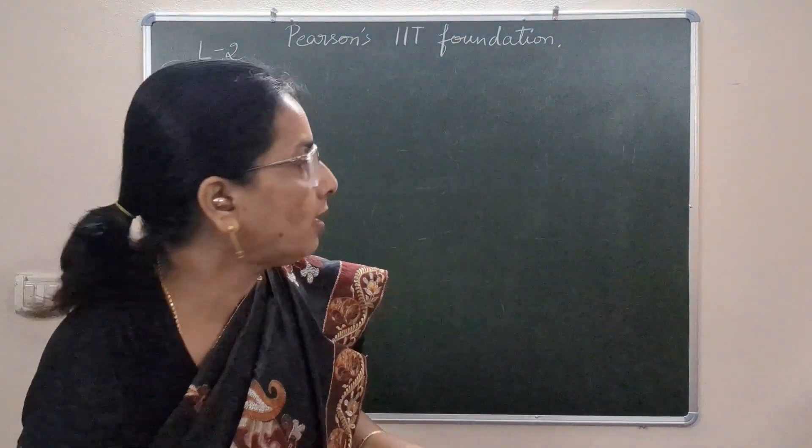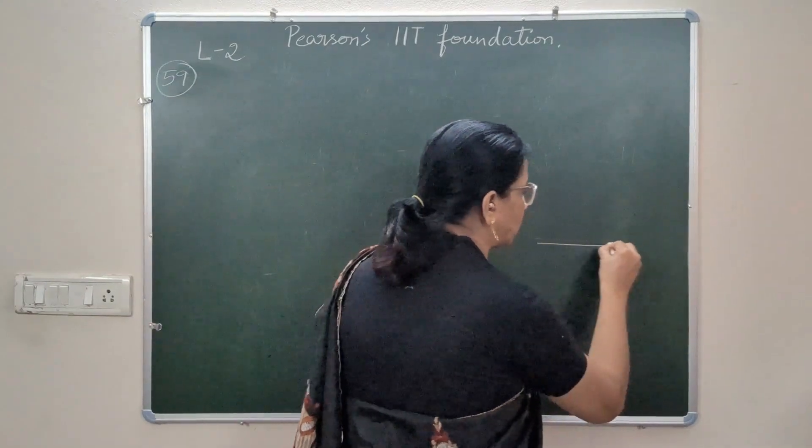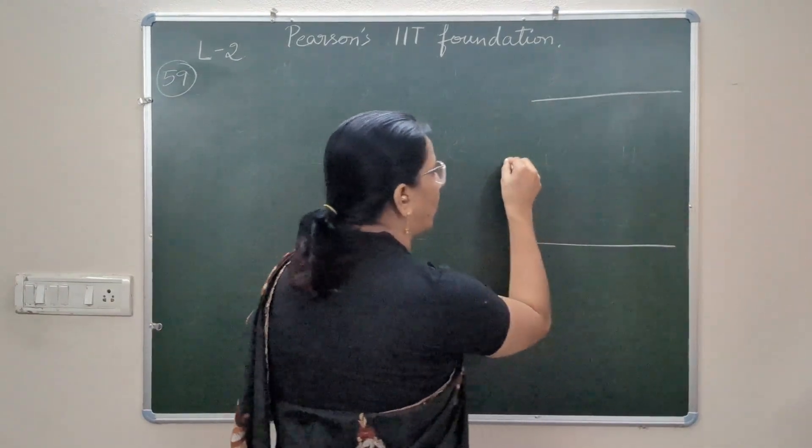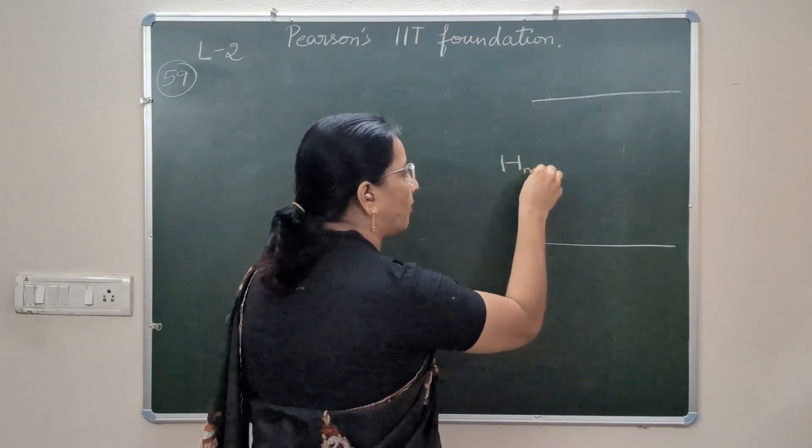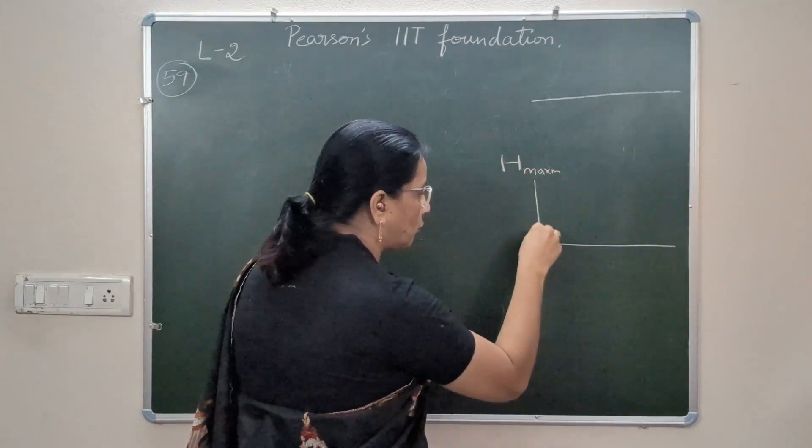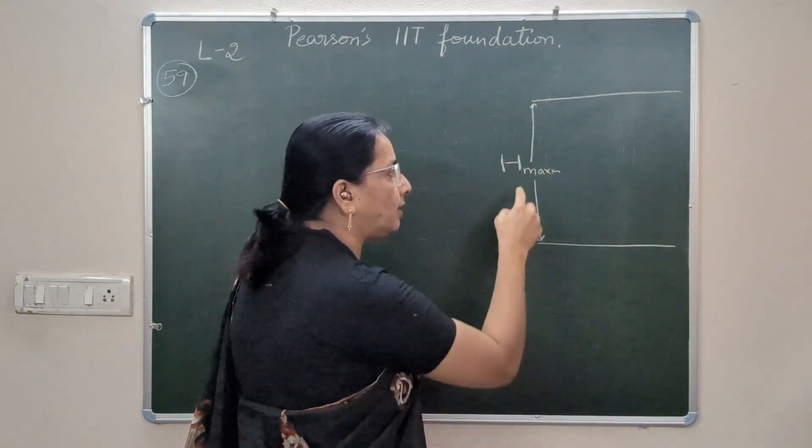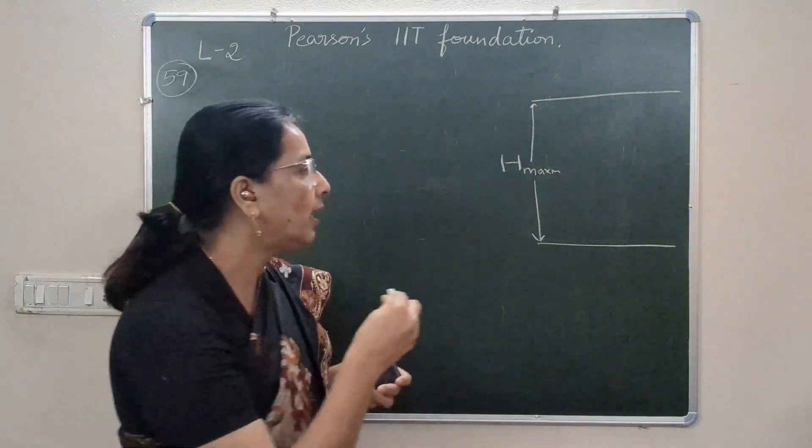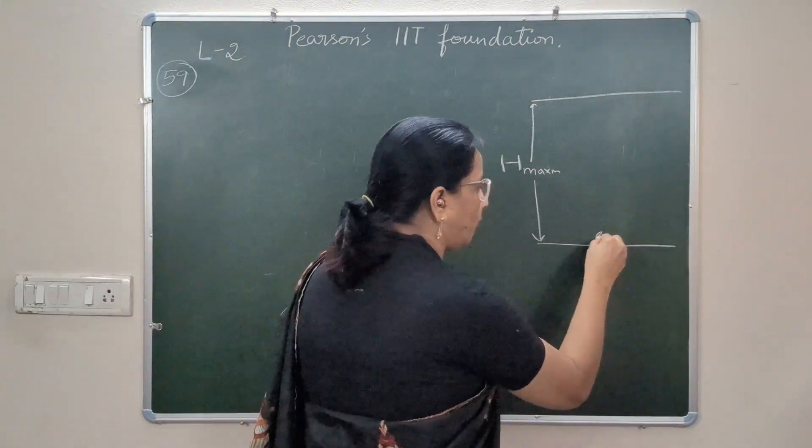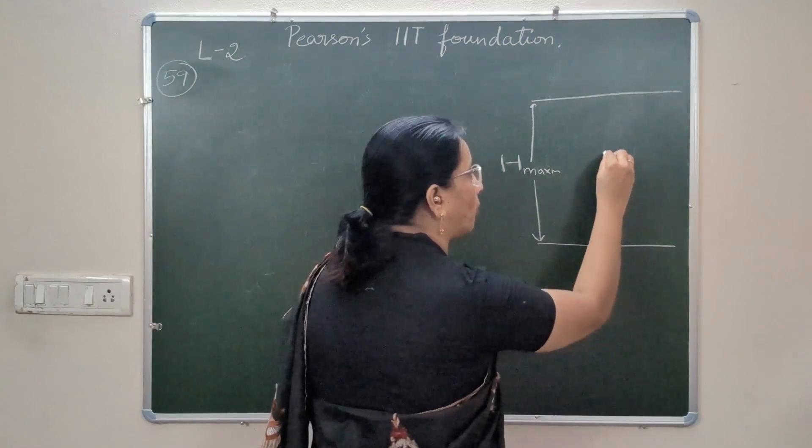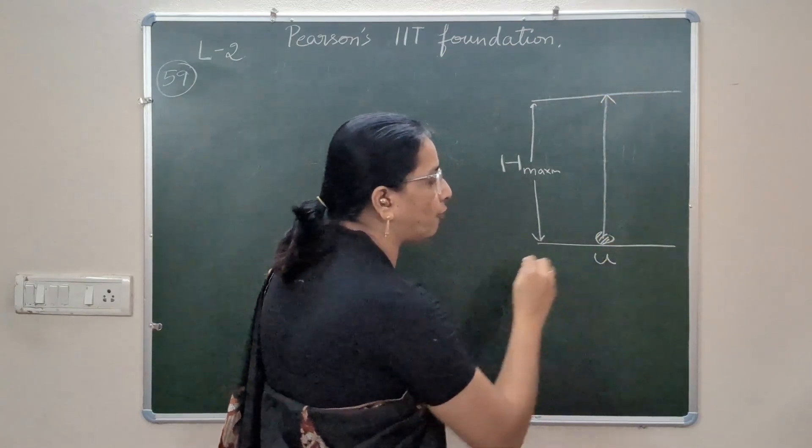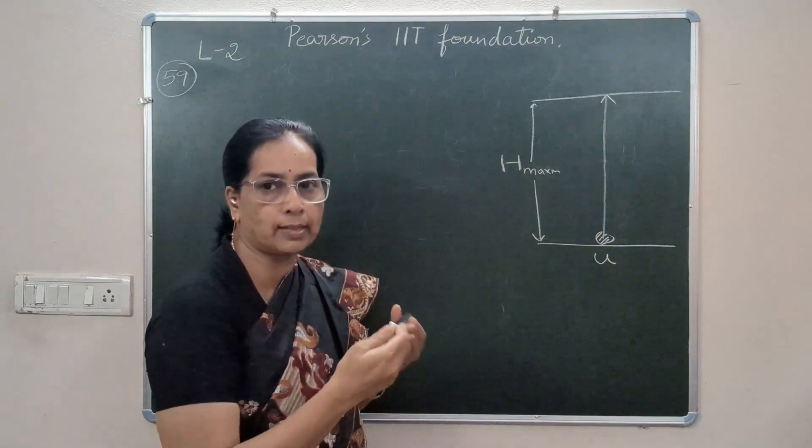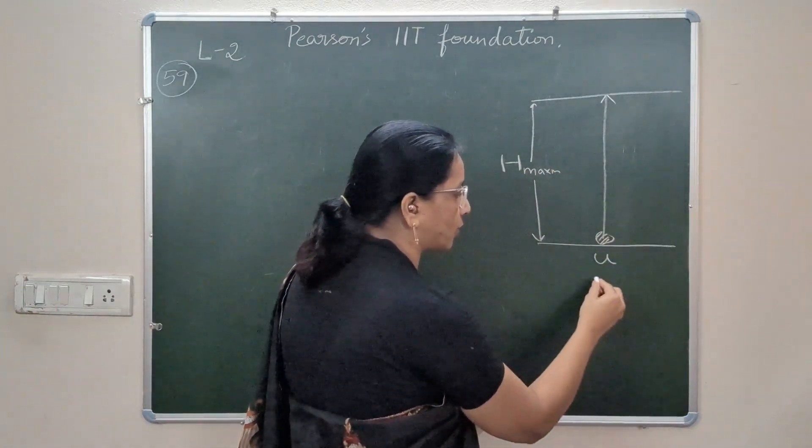So the given information, let us put it in form of a diagram. This is the ground level and this is the maximum height above the ground level up to which the thrown object reaches, and this is what we are supposed to find. Then there is an object which is thrown vertically upwards with an initial velocity of u which we don't know, we are supposed to find also in that process of solving.